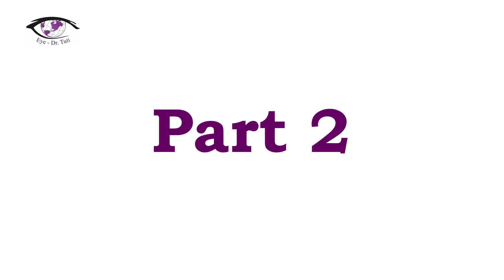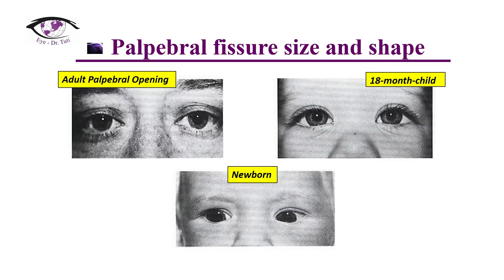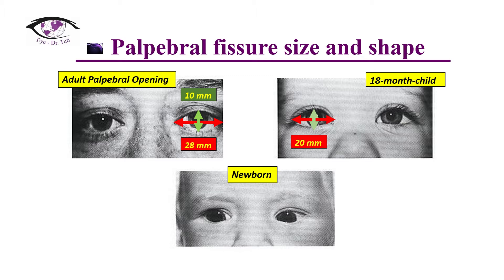The size and shape of the palpebral opening should be considered at the beginning of extraocular muscle surgery. The average adult palpebral opening is 28 millimeters long and 10 millimeters high. An average 18-month-old child has a palpebral opening 20 millimeters long and 8.5 millimeters high. A newborn has a palpebral opening measuring 18 millimeters long and 8 millimeters high. Of course, those parameters differ from patient to patient, but those numbers are averages for each specific age range.